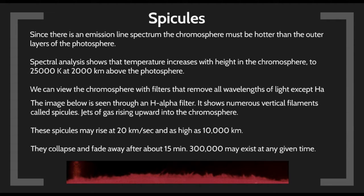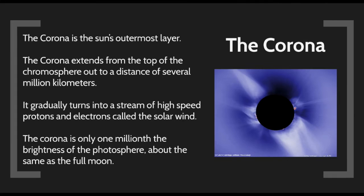Looking at spectral analysis, the temperature rises up to 25,000 Kelvin at about 2,000 kilometers above the photosphere. As I leave the photosphere, the Sun is getting hotter. If I remove all wavelengths except the H-alpha line, I see filaments shooting up from the photosphere into the chromosphere. These filaments are called spicules. They may rise at 20 kilometers per second and get as high as 10,000 kilometers. They last about 15 minutes, and there may be around 300,000 at any given time.